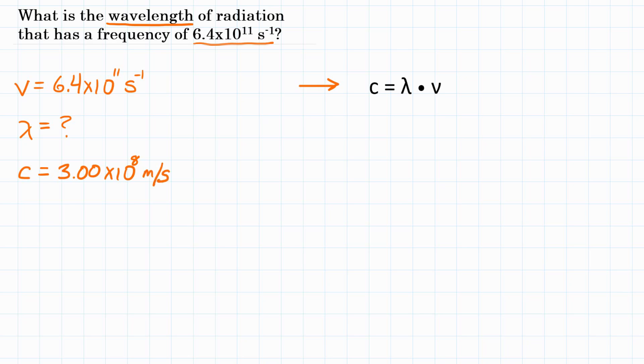Okay, so we have frequency, we have speed of light, we are looking for wavelength. Let's manipulate our equation to isolate wavelength or to get wavelength by itself. So to do that, we're going to divide both sides of the equation by frequency. And we are doing that because on the right we have wavelength times frequency. So to get frequency on the other side and to get it to cancel on the right side, we need to divide both sides by frequency.